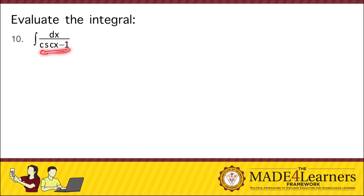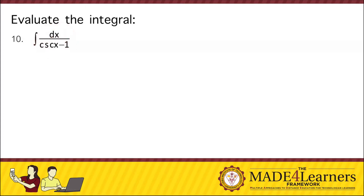We take note that there is a binomial in the denominator and in the numerator we have 1. We cannot perform integration by substitution because we cannot eliminate anything by doing so. So what we can do is employ a method to change this into integrable form. One method we can use is to multiply — because we are given a binomial in the denominator — multiply it with its conjugate.